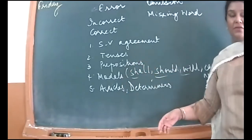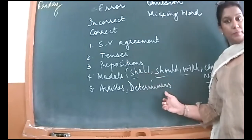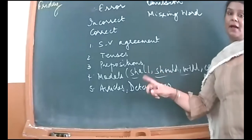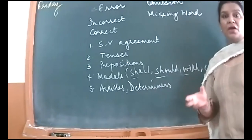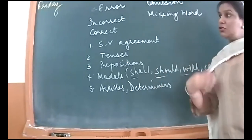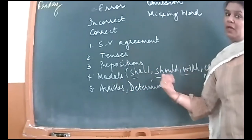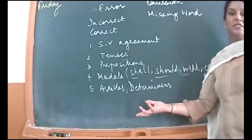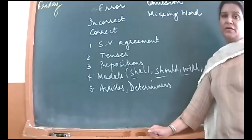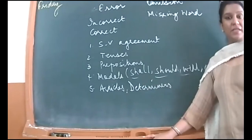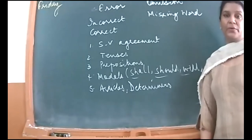Then you have your modals — primary auxiliaries — which do not change their form. Things to remember: what are the modals, and what mode does each express? Is it a possibility, suggestion, capability, obligation, or necessity? Then come articles and determinants — your 'a,' 'an,' and 'the' — along with possessives, demonstratives, distributives, and so on. We will go through all these grammar items so we know what to put where during editing.